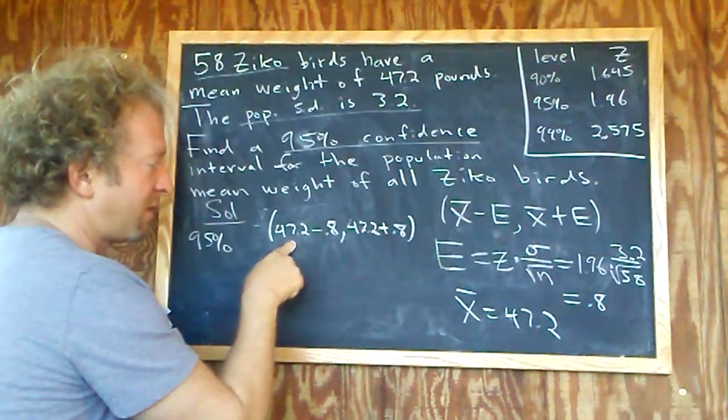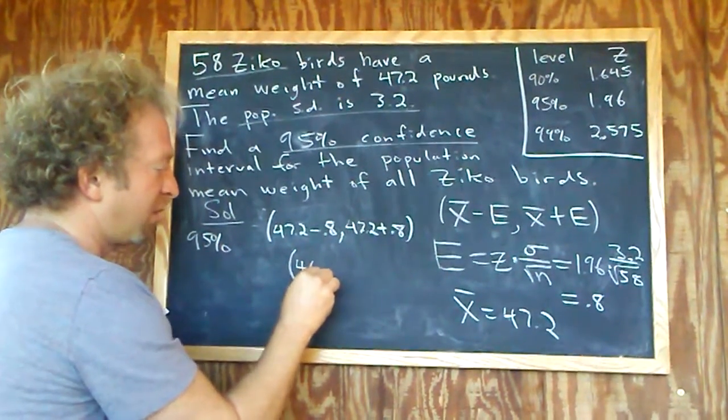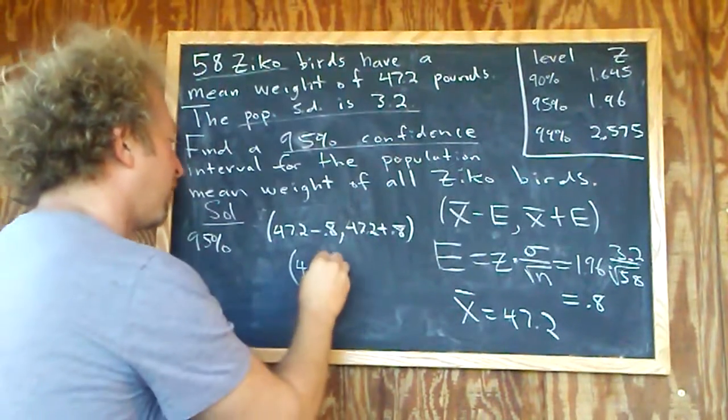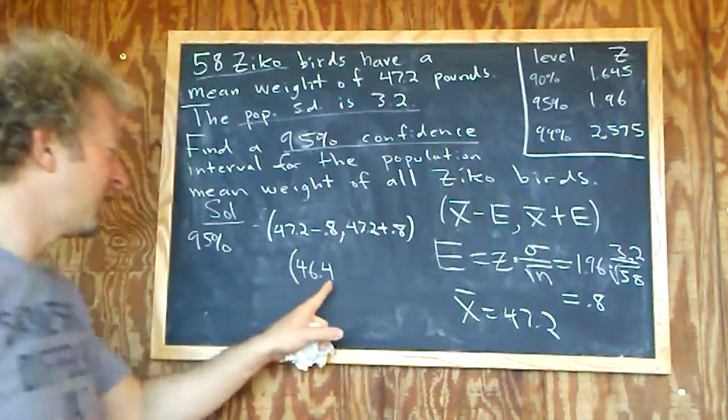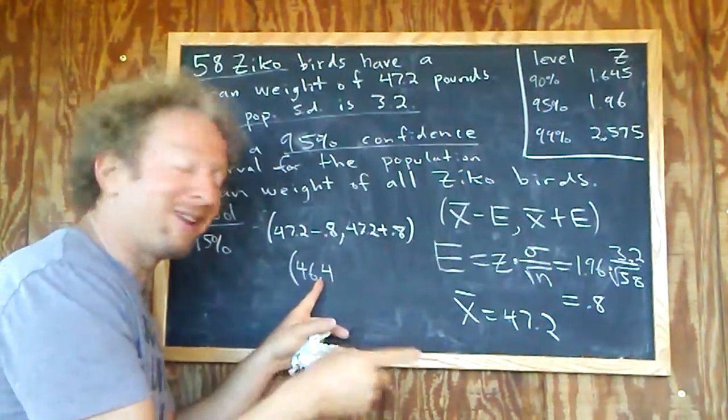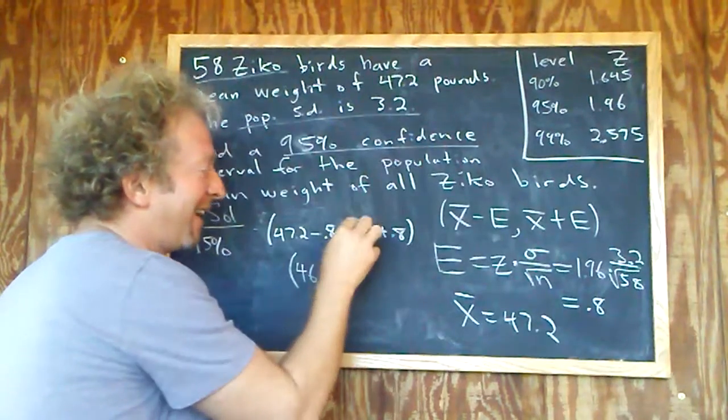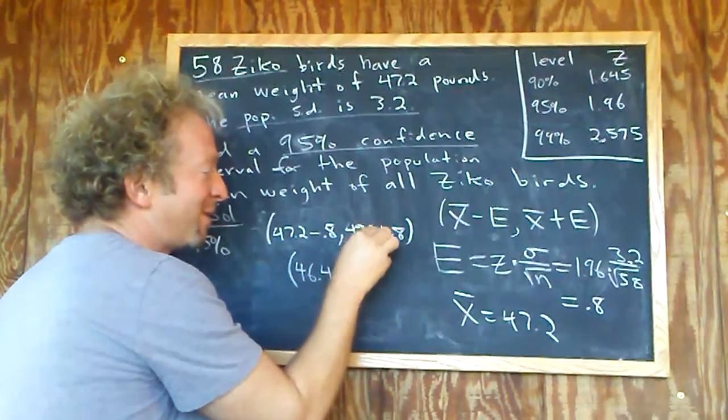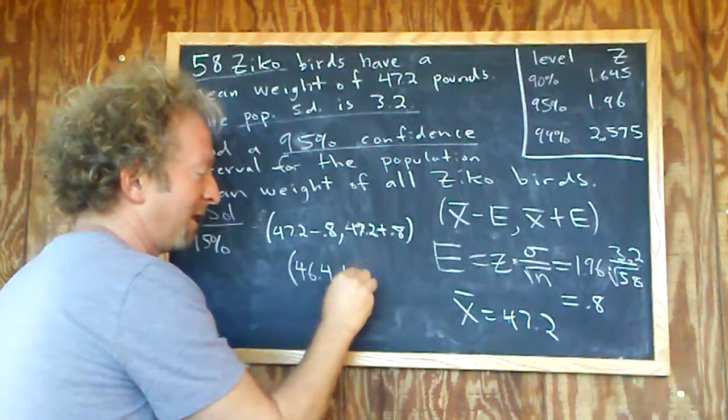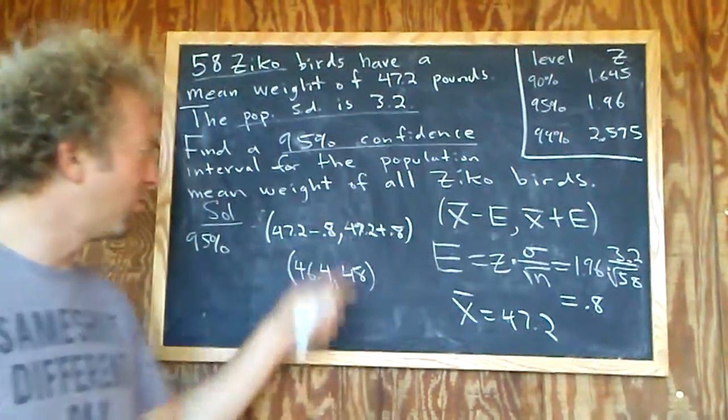47.2 minus 0.8, that's going to be 46.4. Yeah, because if you add 0.6 to this you get to 47, and you add 0.2 more, that's 47.2, right? Some math there without a calculator. And this one's easy, 47.2 plus 0.8, that's going to be 48. So that's your confidence interval. Just plug everything in here and work it out.